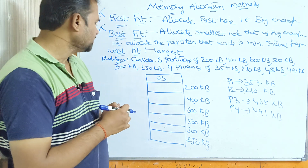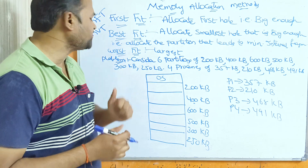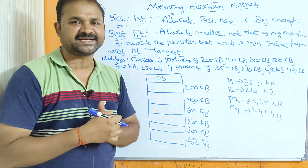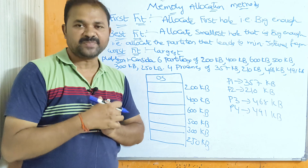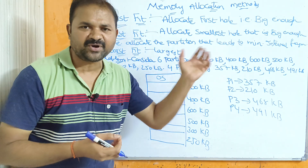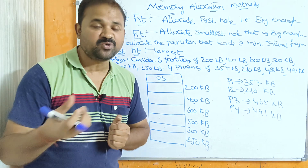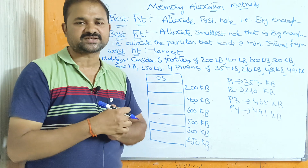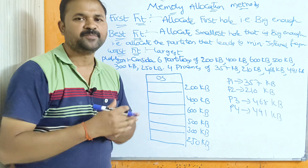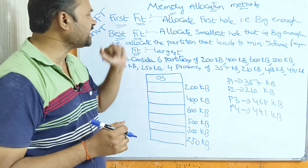First fit, best fit, and worst fit — these three memory allocation techniques are mainly useful in multiprogramming with fixed number of tasks as well as multiprogramming with variable number of tasks, in order to store the processes in the main memory. First, let us see what is first fit.